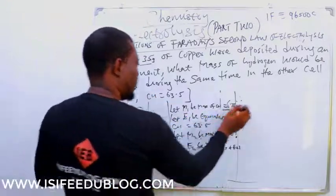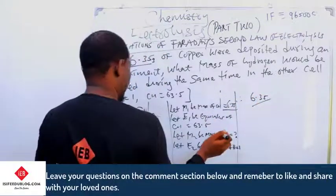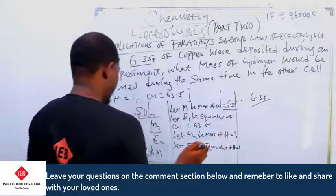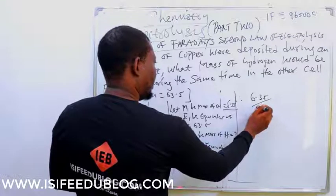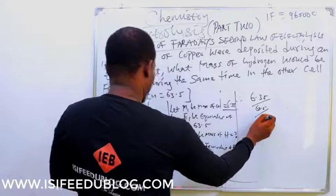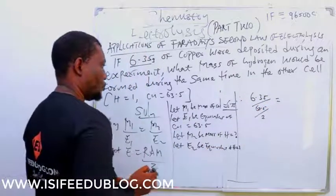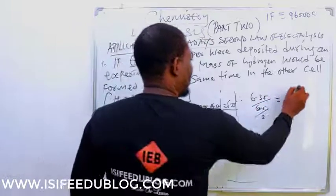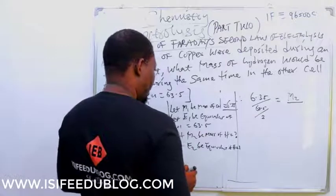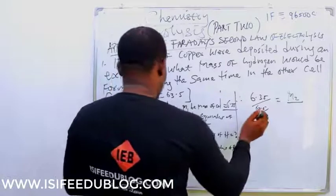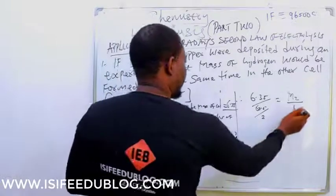Therefore, 6.35 over E will be this, so this is 63.5 over Z is 2 for copper. That is equal to M2 over RAM of H is 1, valence is 1.